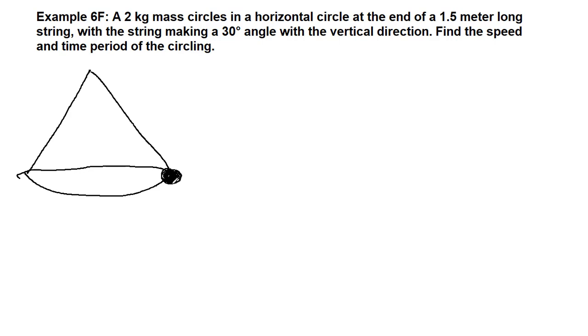What we have is a mass that is circling. The reason I've drawn two things here is just to recognize that we could catch it on either end here as it goes around and around. The 2 kilogram mass, so we can make our list of given information: 2 kilograms for the mass.